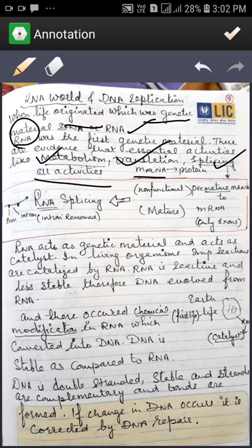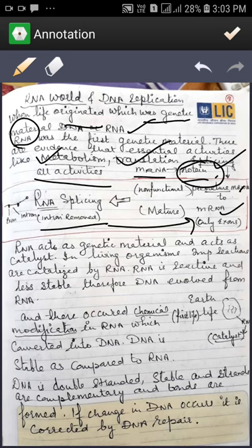Translation means messenger RNA forms proteins. And splicing means when premature messenger RNA forms messenger RNA. So by RNA splicing, exons and introns are removed and all the exons they form the mature RNA.